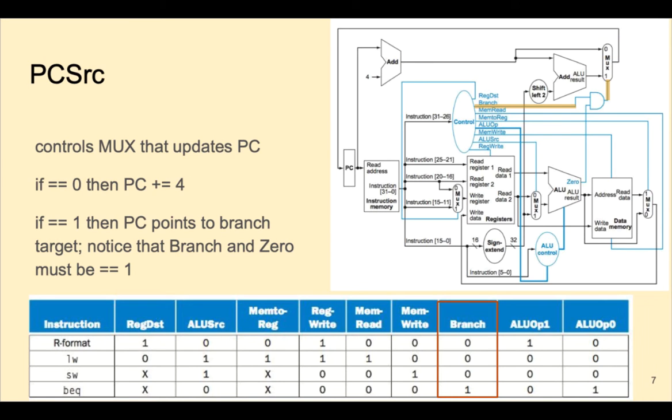If it is a branch instruction, a 1 goes into the AND gate. The other input to the AND gate comes from the 0 flag of the ALU. If the register comparison was zero,